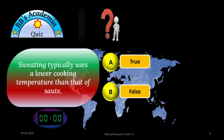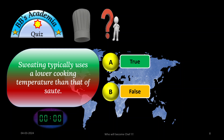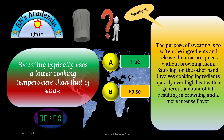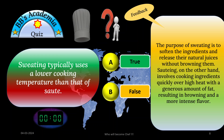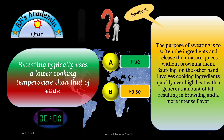Time is up. The correct option is very much true. The purpose of sweating is to soften the ingredients and release their natural juices without browning them — remember, without browning them. Sautéing, on the other hand, involves cooking ingredients quickly over high heat with a generous amount of fat, resulting in browning and more intense flavor. The basic purpose of sweating and sautéing is therefore different.